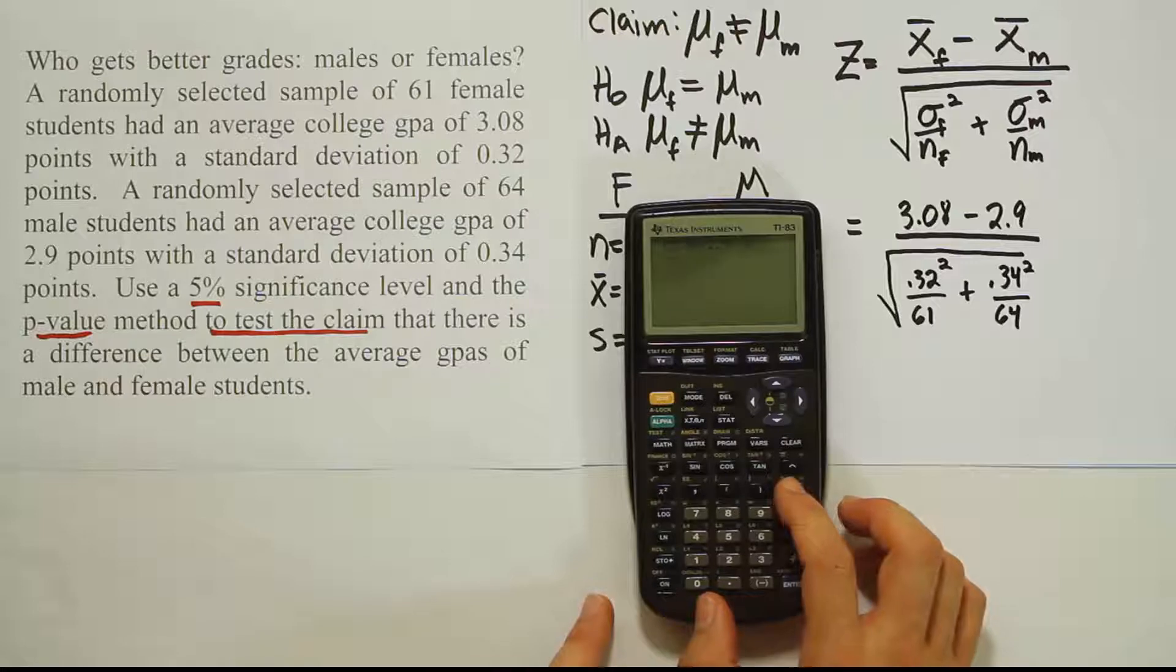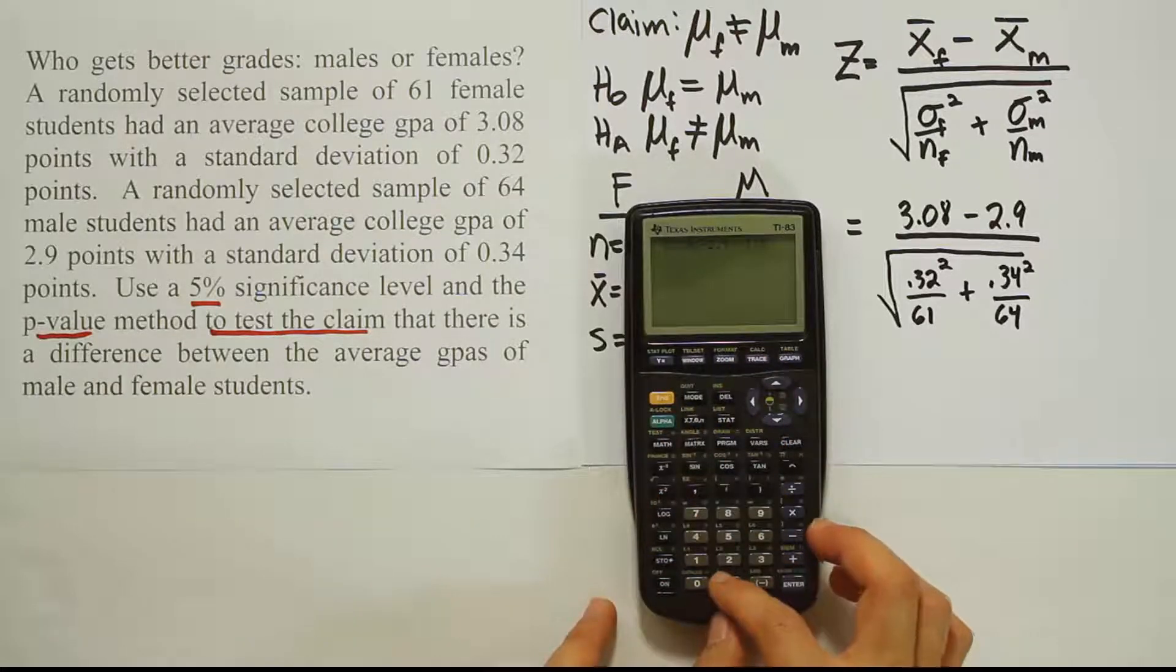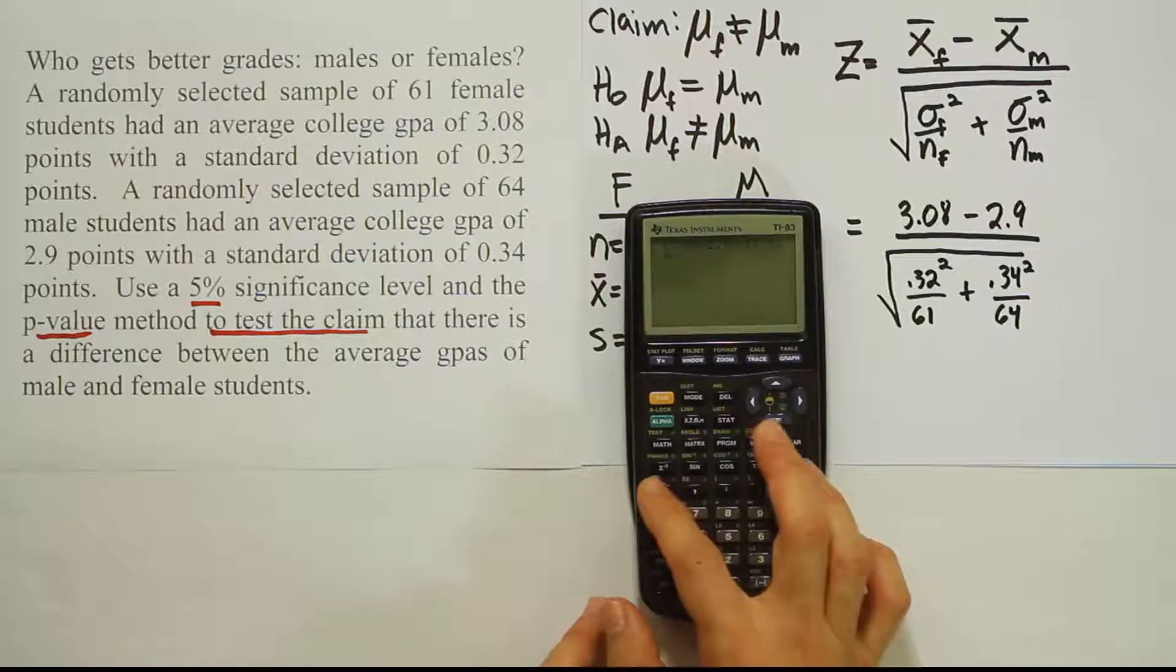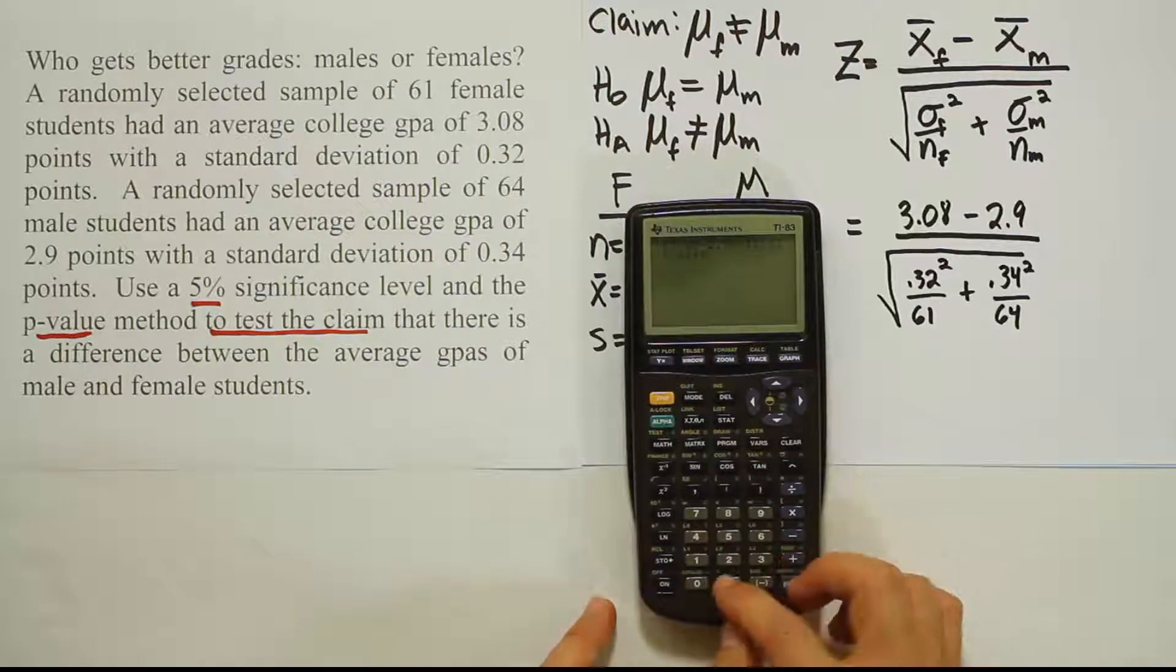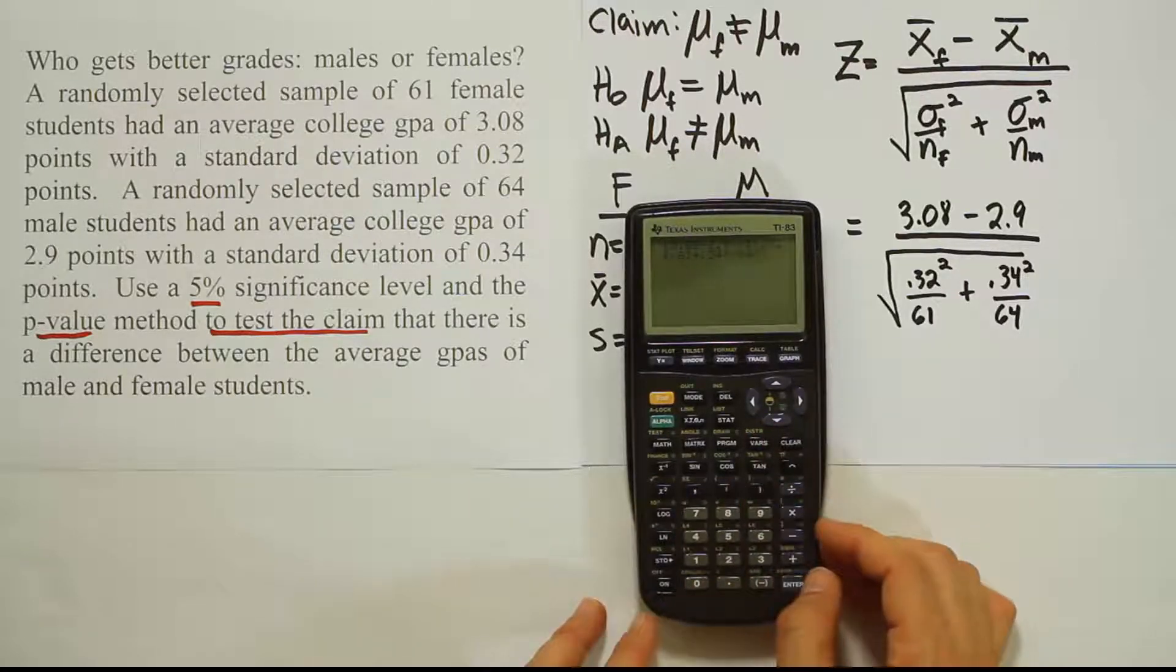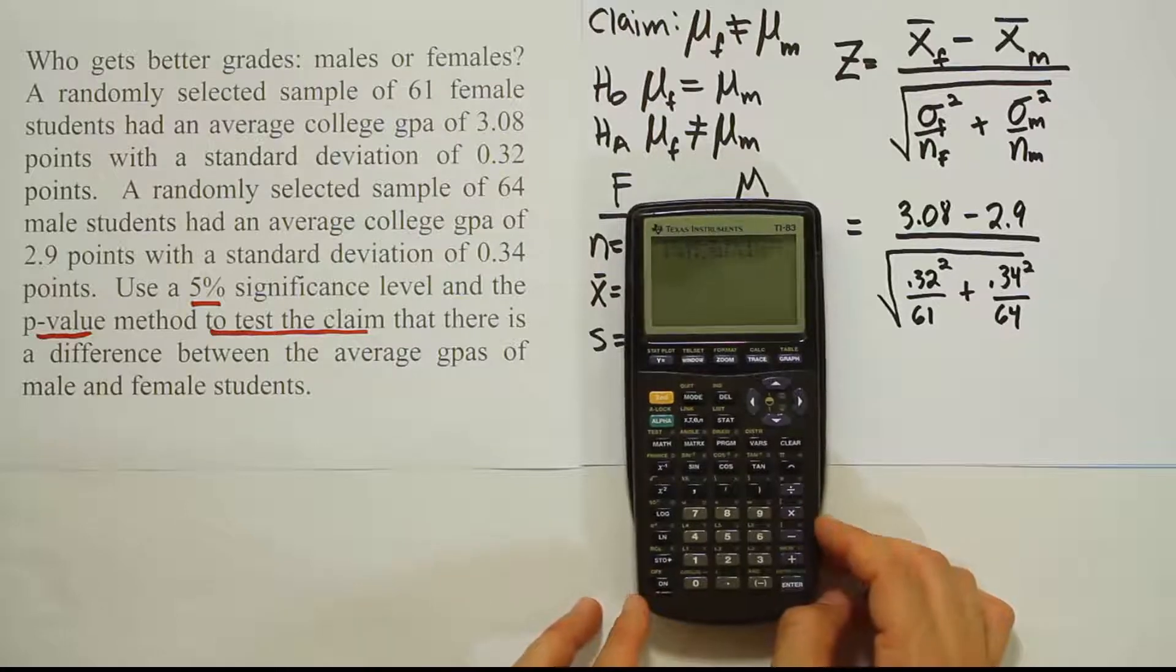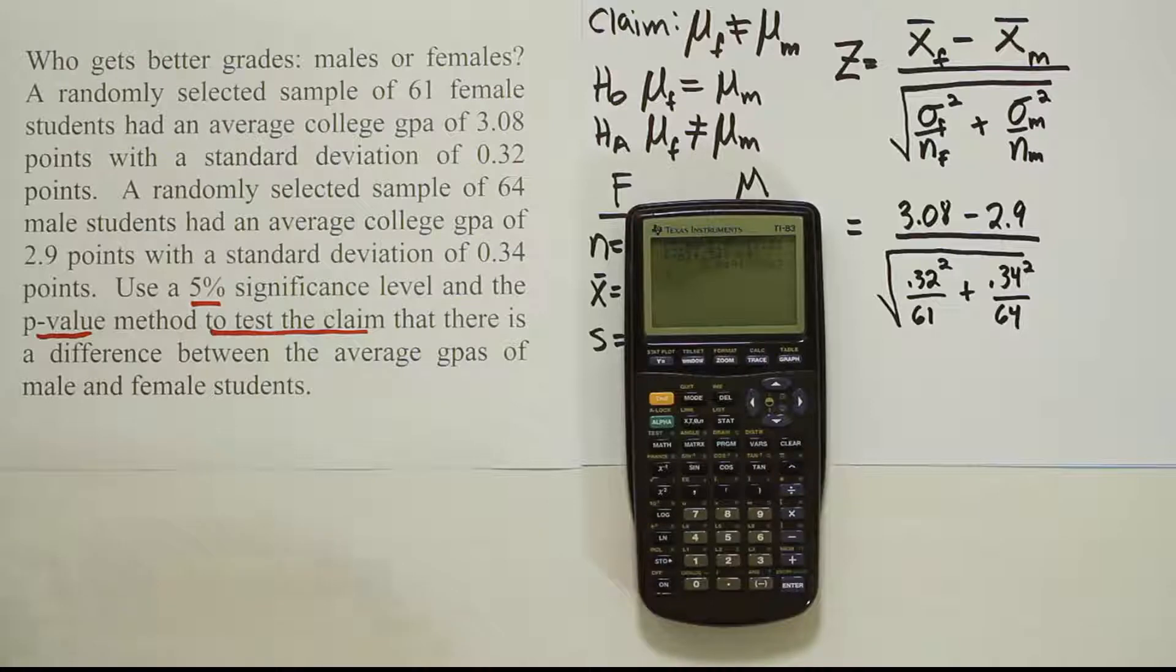Then I'm going to use the square root symbol and just type in what I see there: 0.32² divided by 61 plus 0.34² divided by 64. Close that parentheses, which is the parentheses that came with the square root. Hit enter and end up with a result of 3.05 when I round off to two places. For the p-value method, we should use two decimal places. So we'll use 3.05.